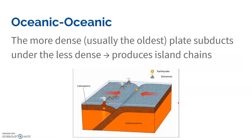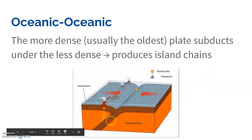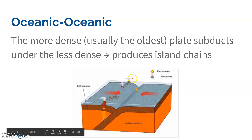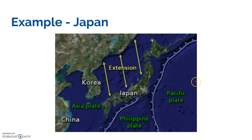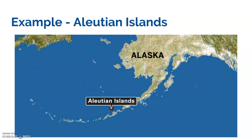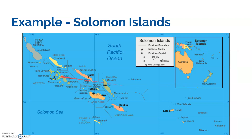With oceanic-oceanic convergent boundaries, subduction also occurs because typically one plate is a little older than the other, making it more dense from being compacted longer. As subduction occurs, we see a trench and magma bubbling up, but because it's in the middle of the ocean, it produces island chains. Examples you need to know are Japan, the Aleutian Islands in Alaska, and the Solomon Islands near Australia, New Zealand, and Papua New Guinea.